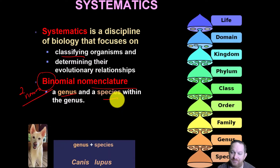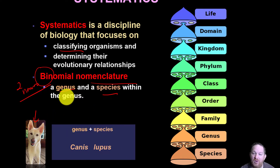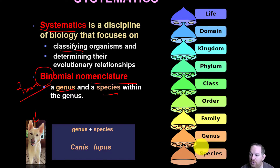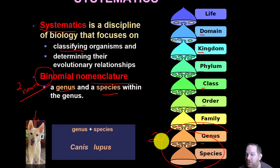So if you forgot what those are, let me remind you using my dog Grace. Gracie's genus and species is Canis lupus. But where does that fall in the whole systematics? Remember, life has: domain, kingdom, phylum, class, order, family, genus, species. The mnemonic I use is: Dear King Paul Cried Out For Good Soup. That gives you domain, kingdom, phylum, class, order, family, genus, species. These last two make up what we call the binomial nomenclature.